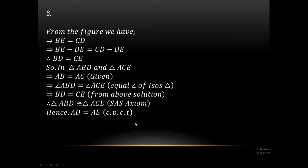Question number 6. From the figure, BE equals CD. BE and CD include DE. So BE minus DE gives BD, and CD minus DE gives CE. Therefore BD equals CE. In triangle ABD and triangle ACE, angle ABD equals angle ACE.